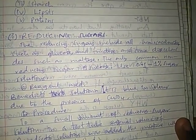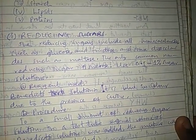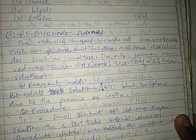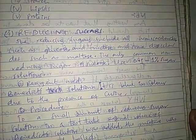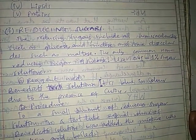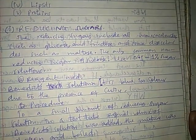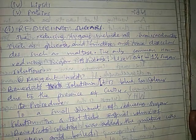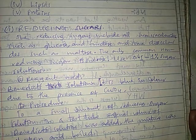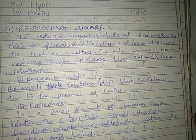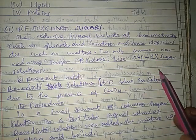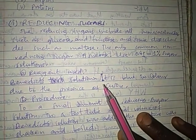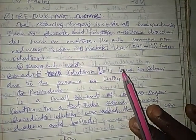Starting with reducing sugar: the reducing sugars include all monosaccharides such as glucose and fructose, and some disaccharides such as maltose. The only common non-reducing sugar is sucrose. So we are using a 0.1 to 1% solution of sugar to test the reducing sugars.